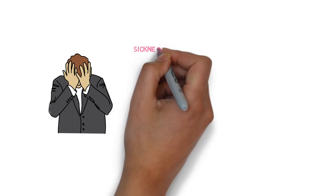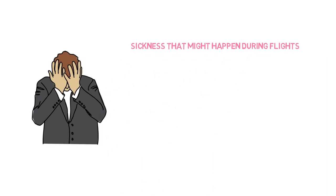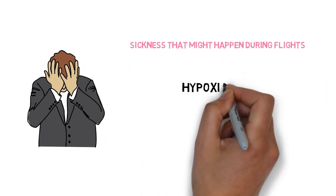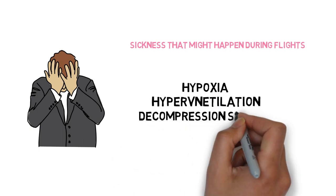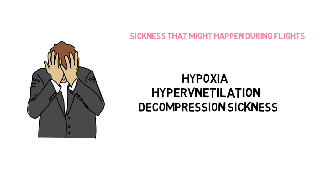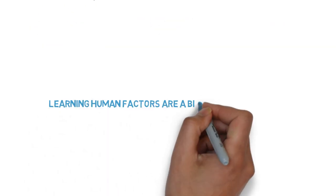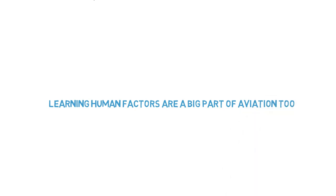Some kinds of sickness can be hypoxia, hyperventilation. Those things happen because maybe you're nervous or there's not enough oxygen. You need to know how to counteract and what the symptoms are so you know how to solve the problem if your passenger or yourself happen to encounter these. Learning about human factors is a big part of aviation as well because you're human.